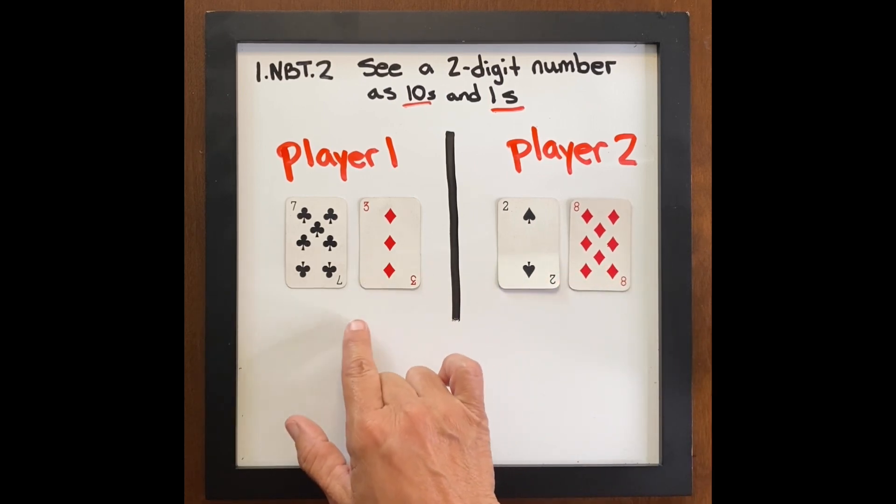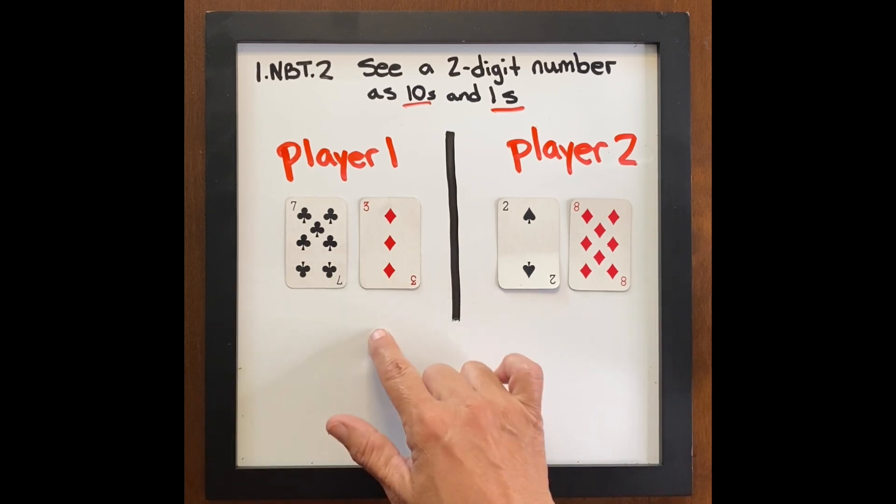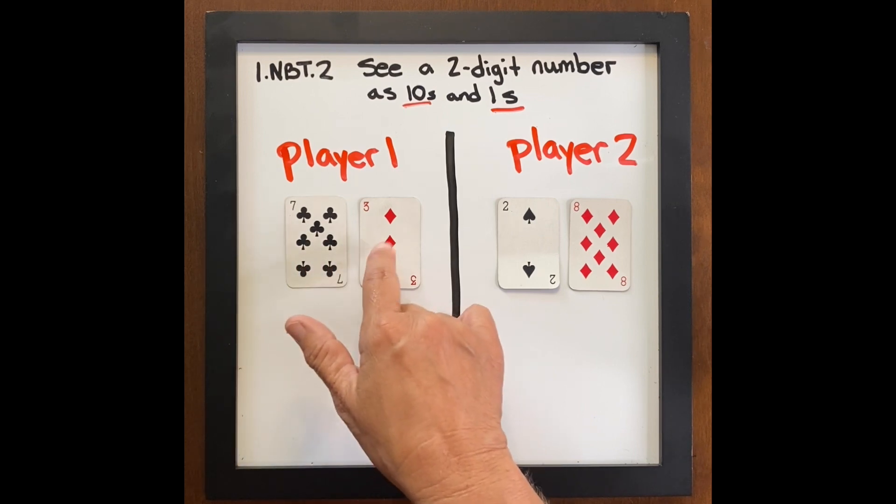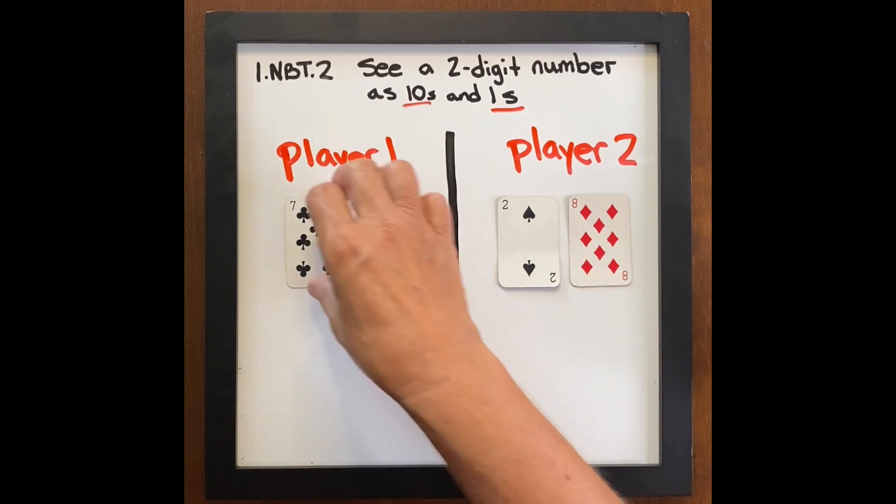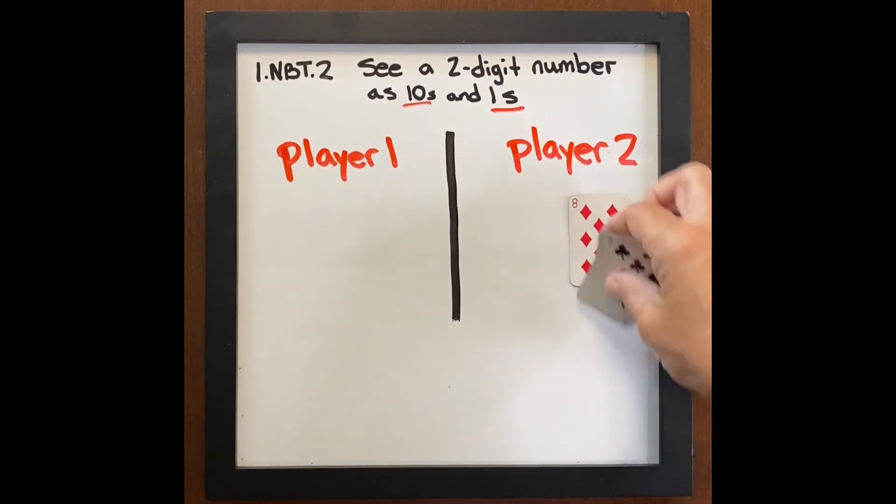So in order for player one to get these cards, and player two pays attention because if player one doesn't do it, player two gets the cards. Player one needs to use that language. Seven tens, three ones is greater than 28, or they can say 73 is greater than 28, and player one gets a point.